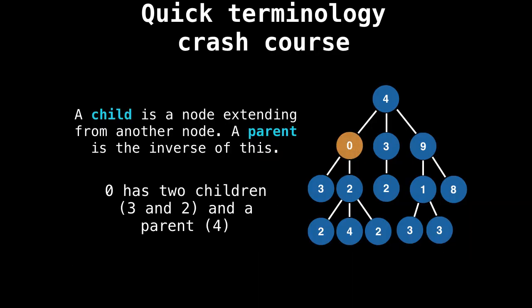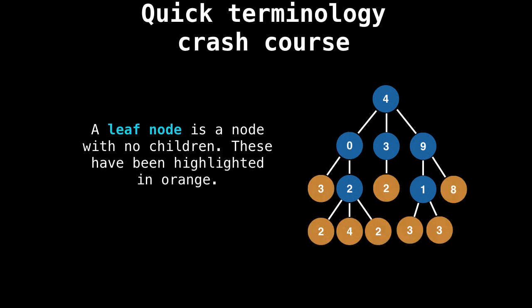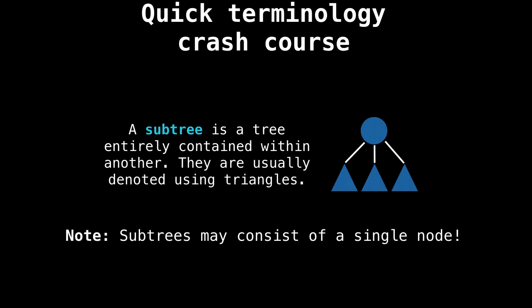Just as an example, if we pick the node zero, it has two children, three and two, and a parent four. We also have the concept of a leaf node. This is a node which has no children. These have been highlighted in orange, just at the very bottom of your tree.